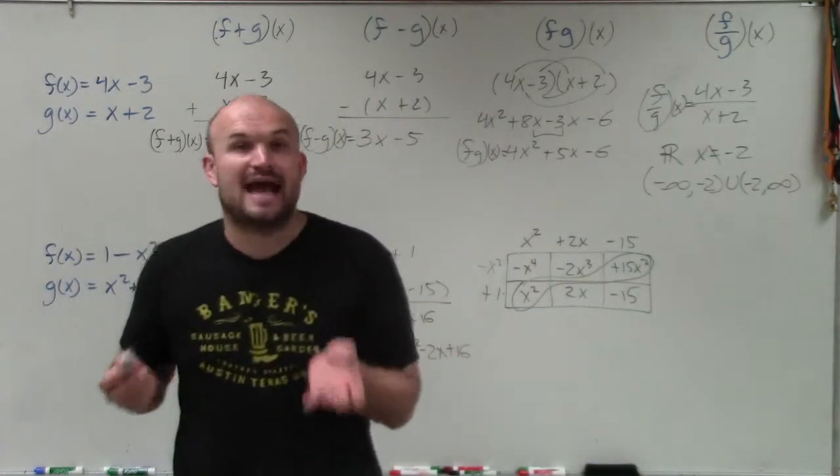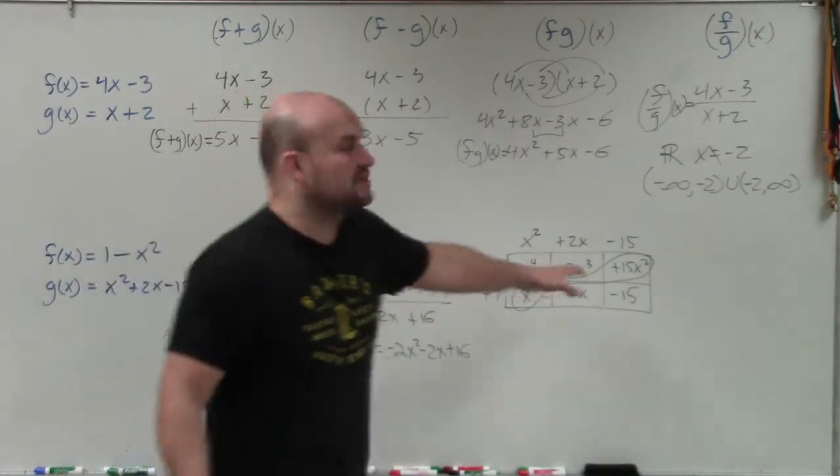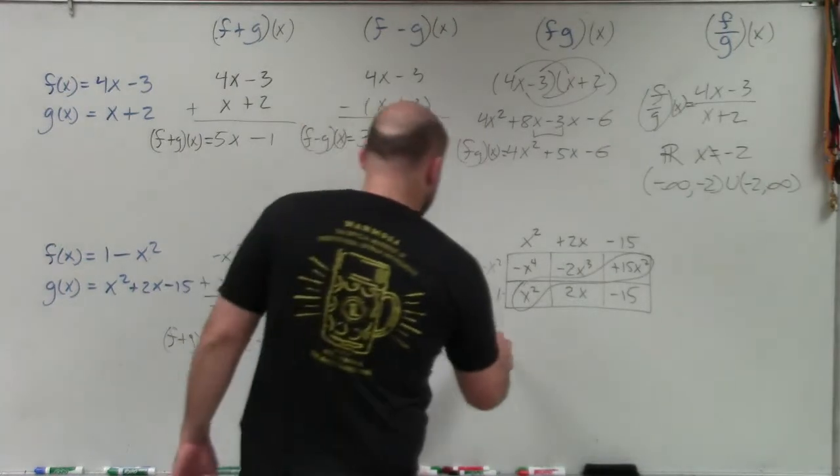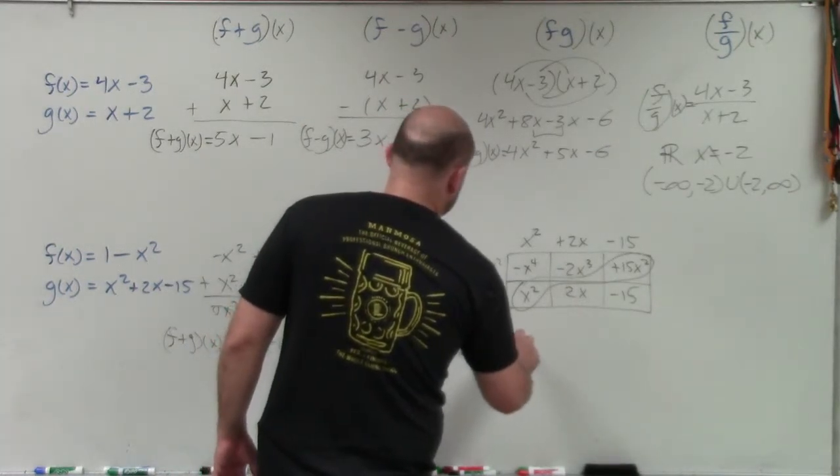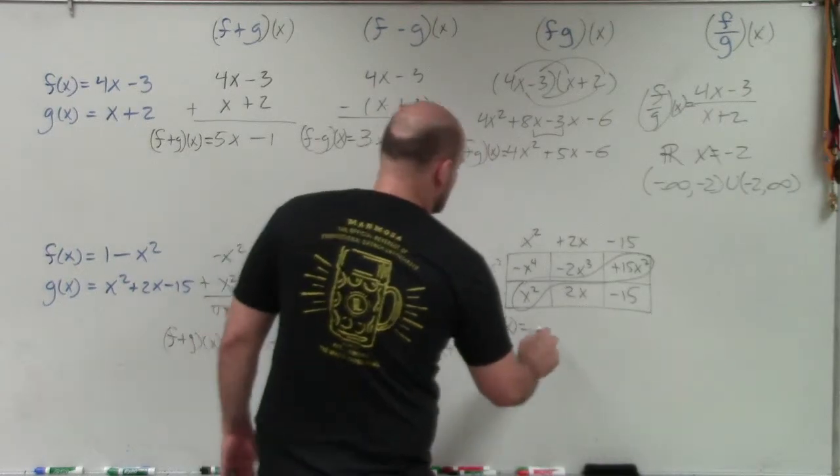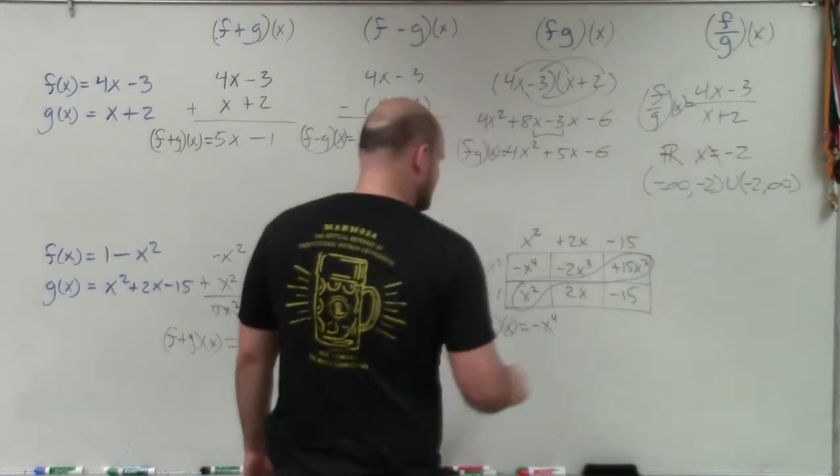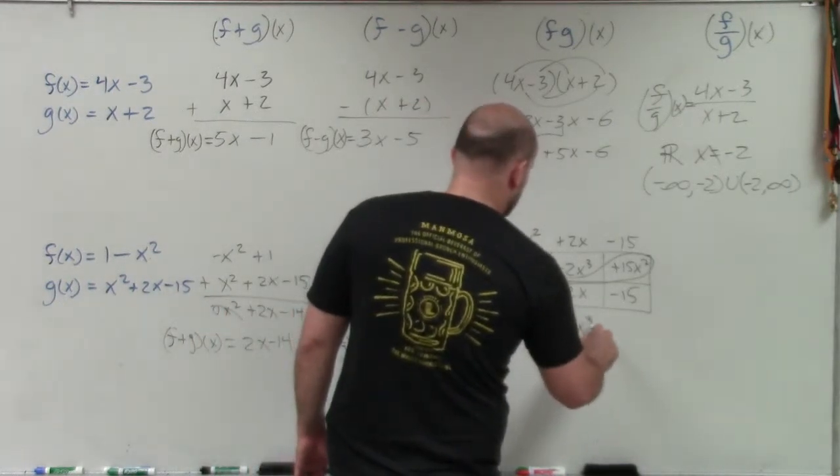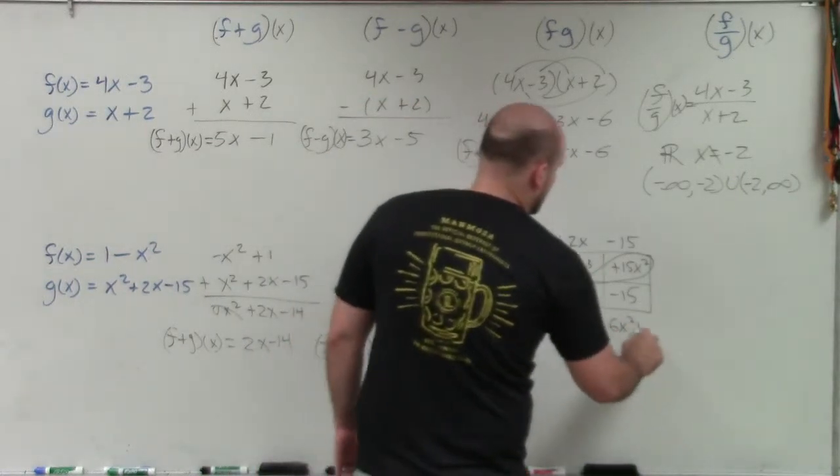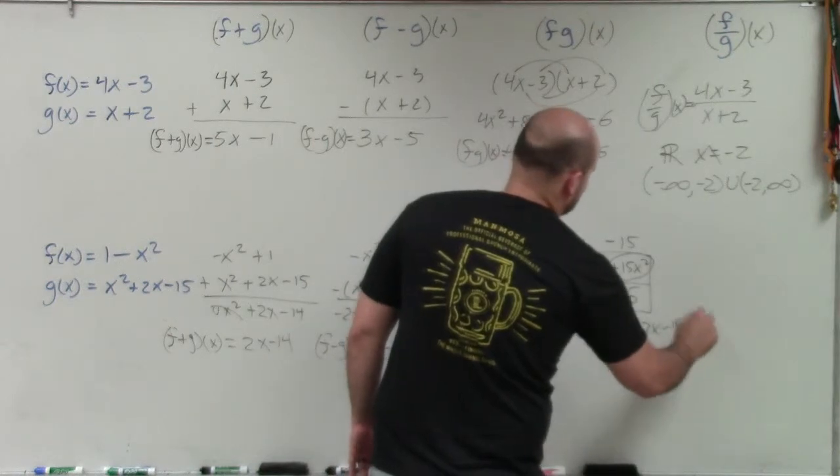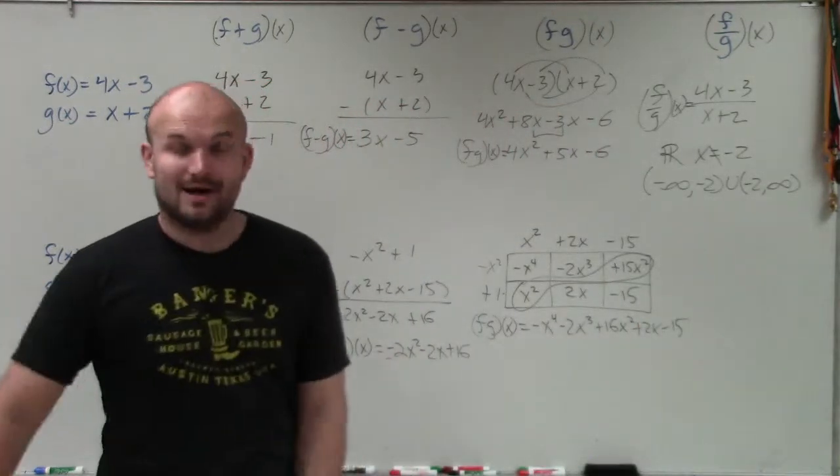And those are those two. Everything else is an x to a different power as well as a constant. And so we can't combine them. So my final answer, which is f times g of x, is going to equal a negative x to the fourth minus 2x cubed. x squared plus 15x squared is a positive 16x squared plus 2x minus 15.